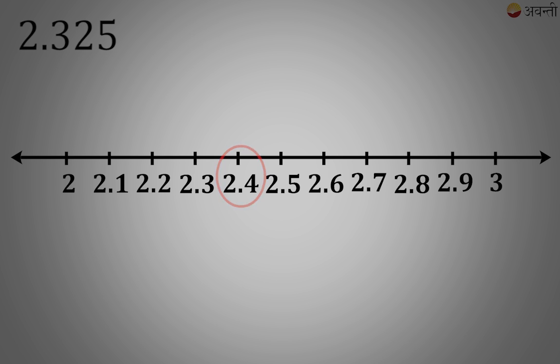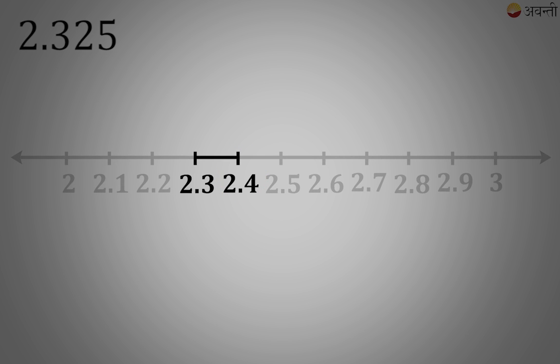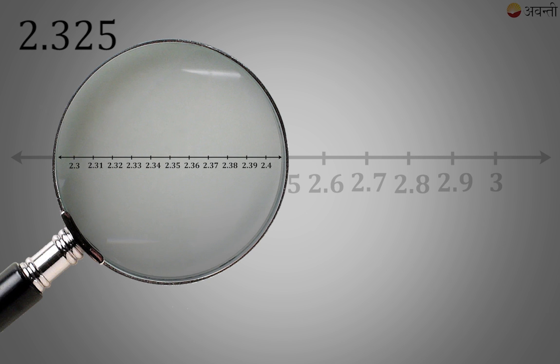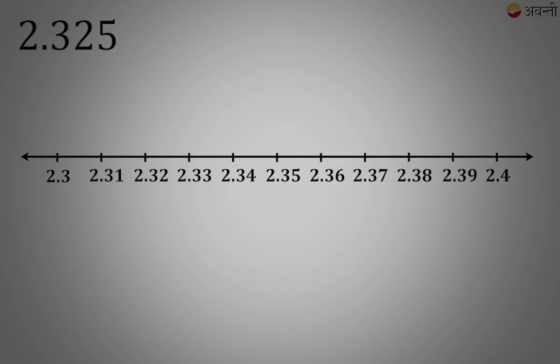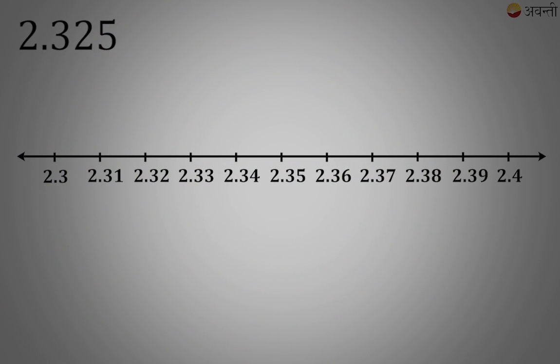So I will again try to magnify the area between 2.3 and 2.4. The distance between 2.3 and 2.4 is 0.1 unit. Now if I divide this part into 10 equal parts, each part would become one hundredth of a unit, that is 0.01.